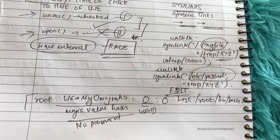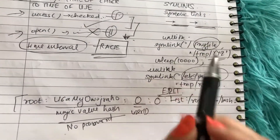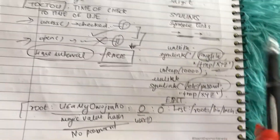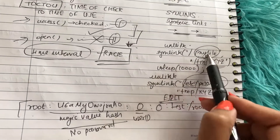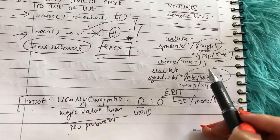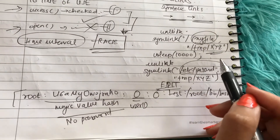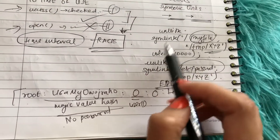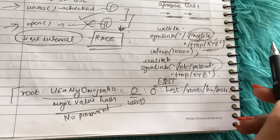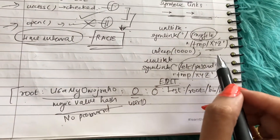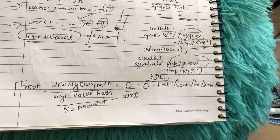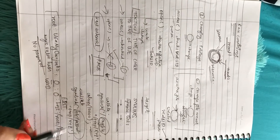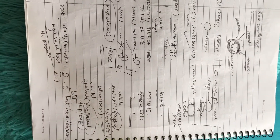One countermeasure Ubuntu has taken is restricting whether a program can follow a symbolic link. This symlink-following has been restricted — it checks whether the symbolic link is being followed in a world-writable directory. You can enable or disable this with a setting called protected_sticky_symlink, set to 1 or 0 accordingly. For other countermeasures on race conditions, you can follow the next video linked in the description box.